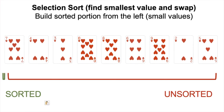Hi everyone! In this video I'm going to go through a trace of the selection sort algorithm. My one sentence quick summary of selection sort is: find the smallest value and swap.